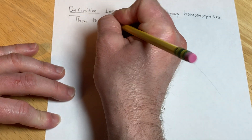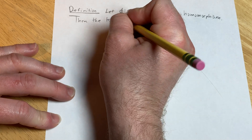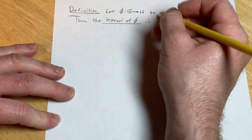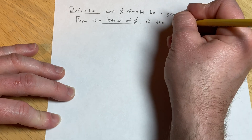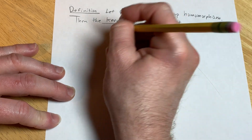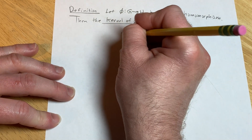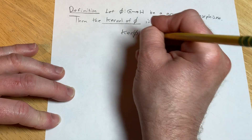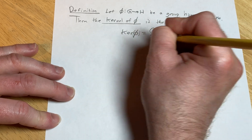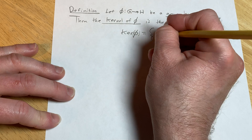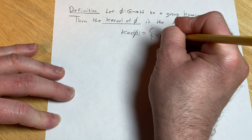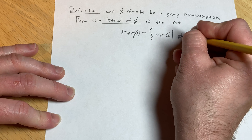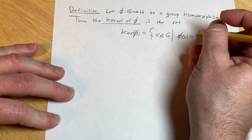Then the kernel of phi is the set — I'm going to write it as ker(phi) — the set of all x's in G such that phi takes x and sends it to the identity element.